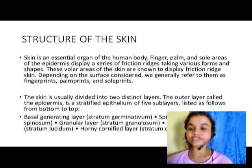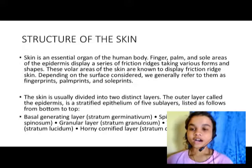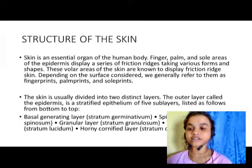The finger, palm, and sole areas display a series of friction ridges — that is the area of the epidermis. They take various forms and shapes. The molar areas of the skin display friction ridge skin depending on the surface considered. We generally consider them as fingerprints, palm prints, and sole prints.